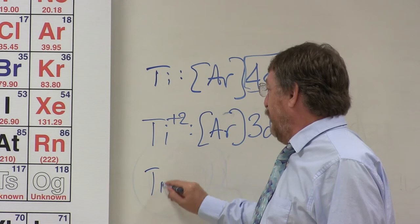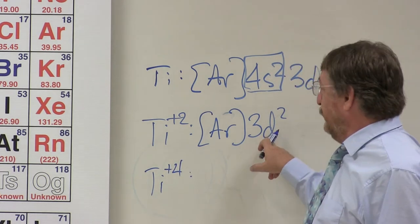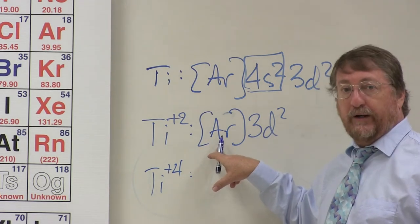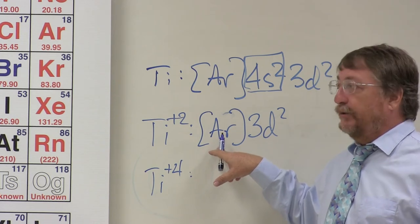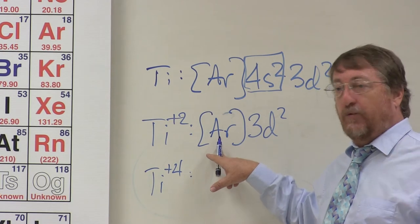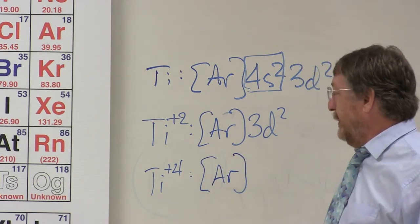Now titanium plus four is the other form of titanium, and clearly there's two more valence electrons there. It's never going to lose electrons out of the core. We know that's true. So it's going to stop at the core every single time. So we can look at titanium and know its maximum charge is going to be plus four. So we're going to have just argon core at titanium plus four.